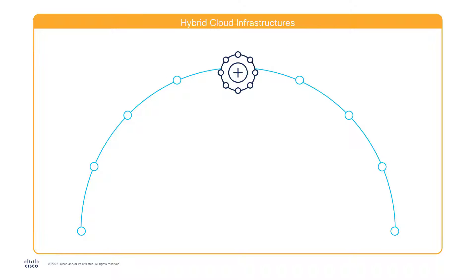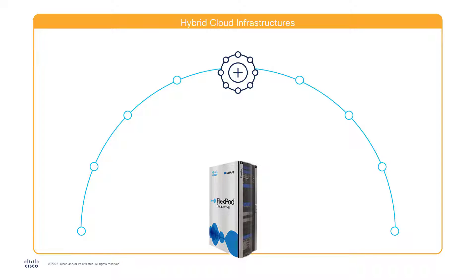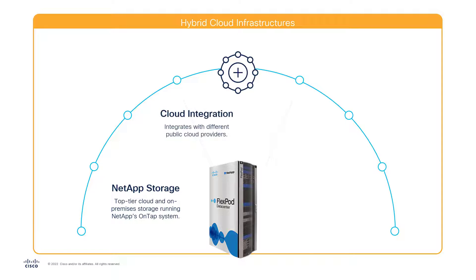This is where Cisco converged solutions come in. Cisco partnered with NetApp to provide the best storage available, creating the FlexPod converged storage solution. FlexPod combines the power of NetApp storage that uses NetApp's OnTap system, which provides deeply integrated public cloud resources to run applications. NetApp also offers storage resources that can interact with other on-premises and cloud resources. The FlexPod converged solution is the result of years of cooperation between Cisco and NetApp.